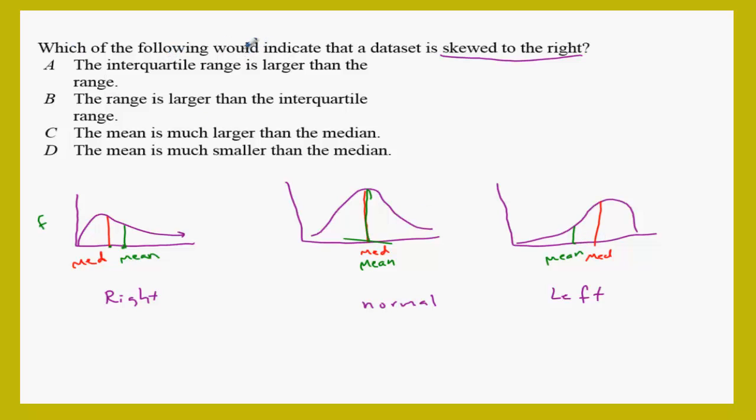Which of the following indicates that skewed to the right, skewed to the right, so the mean greater than the median. The interquartile range is larger than the range, of course, that's impossible. Remember the interquartile when you study the box-and-whisker plot?